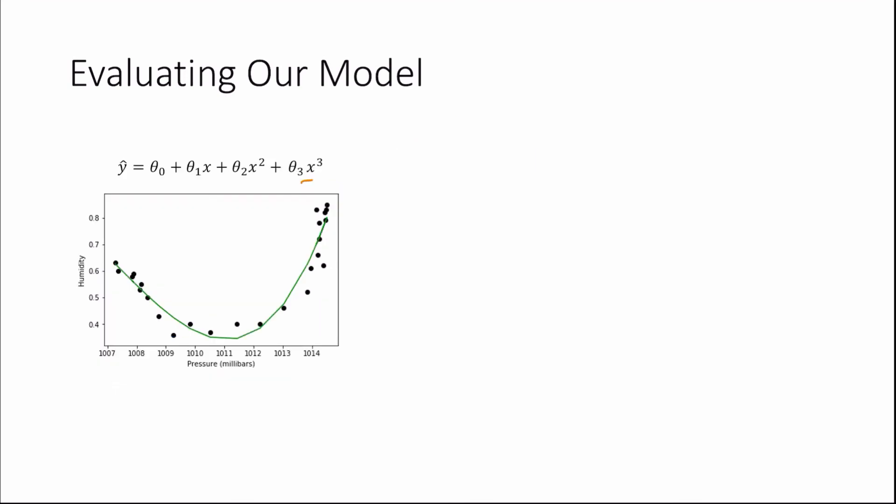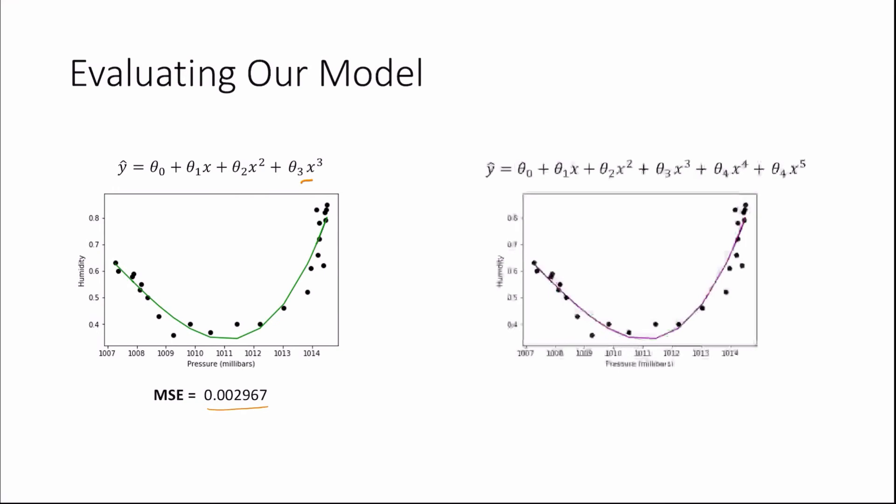If we were to add pressure cubed to our model, we find that the mean squared error gets even lower. And as we add more and more variables, pressure to the 4, pressure to the 5, we find our mean squared error decreases even further.